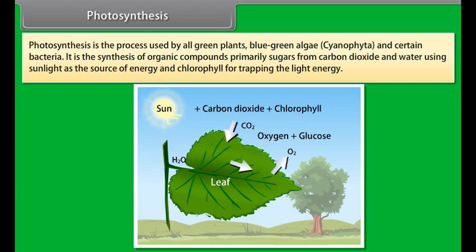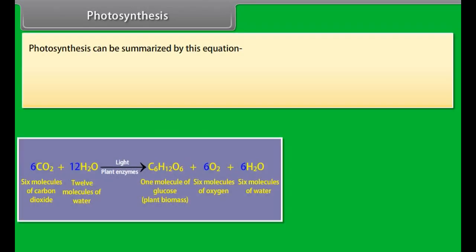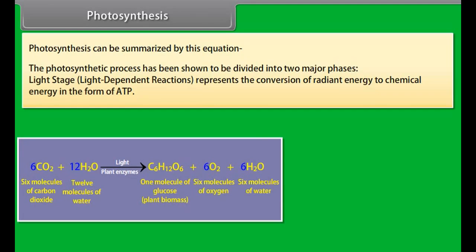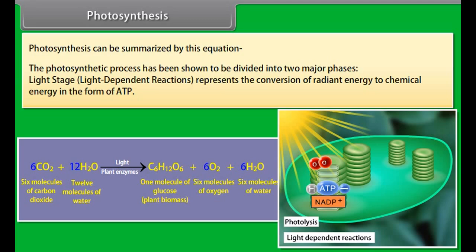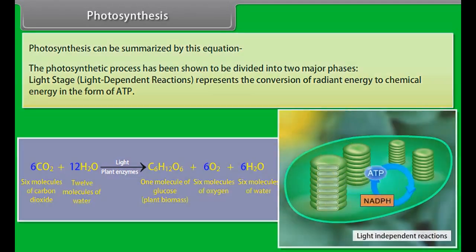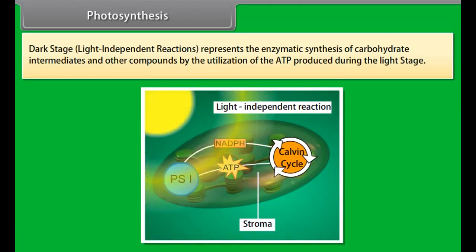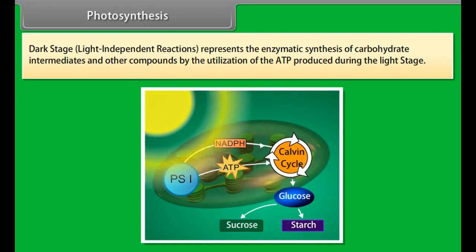Nutrition in plants. As we have already discussed that green plants are autotrophic and synthesize their own food by the process of photosynthesis. Photosynthesis: photo means light and synthesis means to build. Thus photosynthesis means building up food with help of light. Photosynthesis is the process used by all green plants, blue green algae, cyanophyta and certain bacteria. It is the synthesis of organic compounds, primarily sugars, from carbon dioxide and water, using sunlight as the source of energy, and chlorophyll for trapping the light energy.